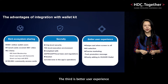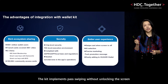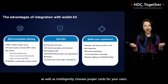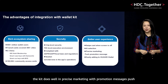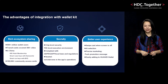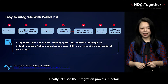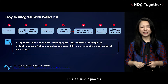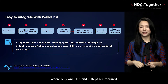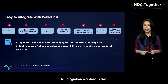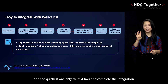The third advantage is better user experience. The kit implements pass-swiping without unlocking the screen, as well as intelligently choosing proper cards for users. Besides, the kit does well in precise marketing with promotion message push. Finally, let's see the integration process in detail. This is a quite simple process, where only one SDK and seven steps are required. The integration workload is small, and the quickest integration takes only four hours to complete.